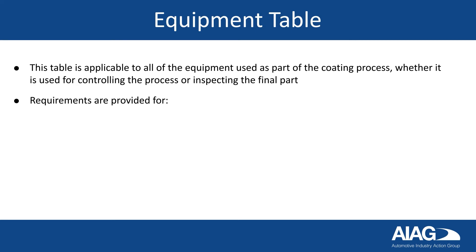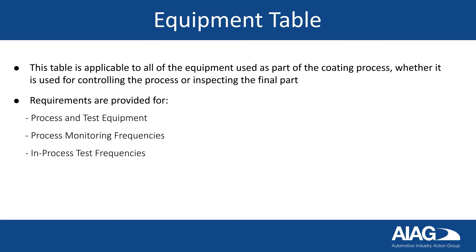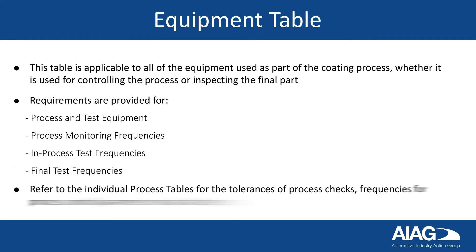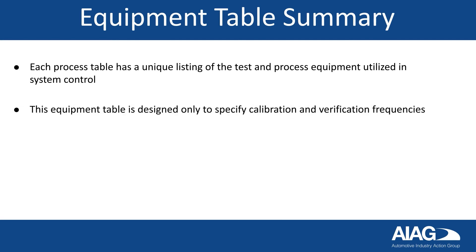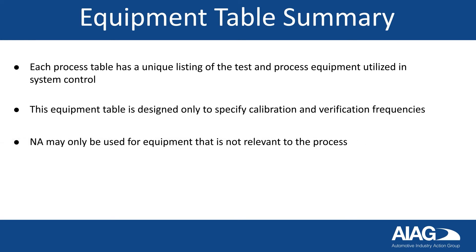Requirements are provided for process and test equipment, process monitoring frequencies, in-process test frequencies, and final test frequencies. Refer to the individual process tables for the tolerances of process checks, frequencies for process control parameters, and part testing. Each process table has a unique listing of the test and process equipment utilized in system control. This equipment table is designed only to specify calibration and verification frequencies. NA may only be used for equipment that is not relevant to the process.